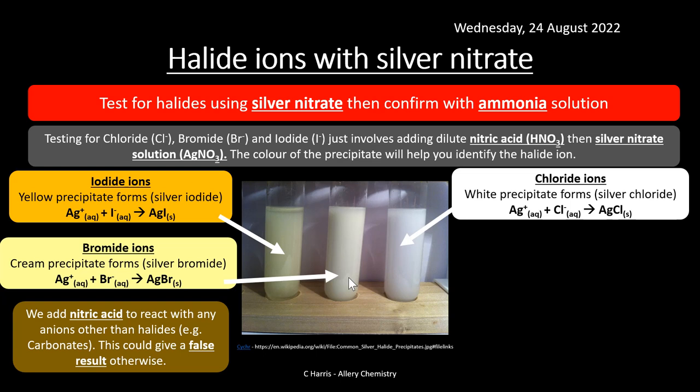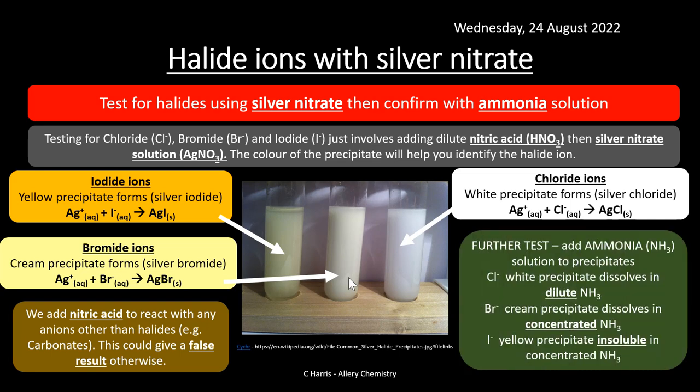One problem is that white, cream, and yellow precipitates are very similar and difficult to tell apart, especially in isolation. To conclusively identify whether it's chloride, bromide, or iodide, we add ammonia.